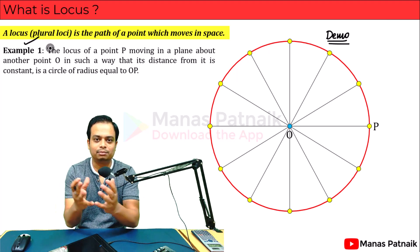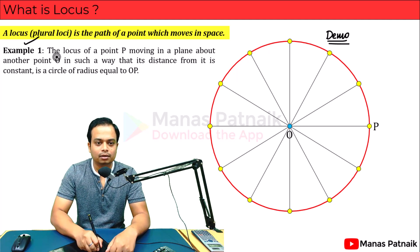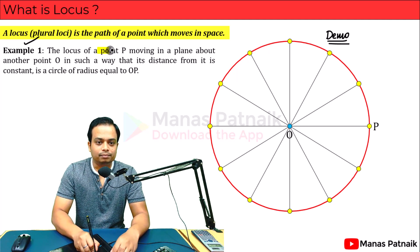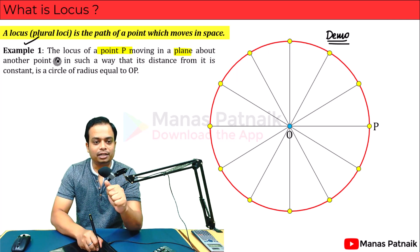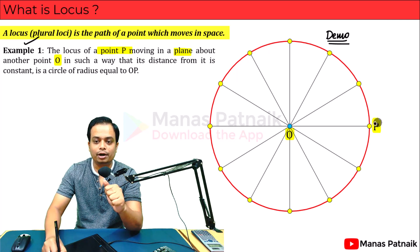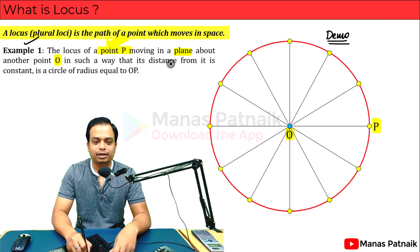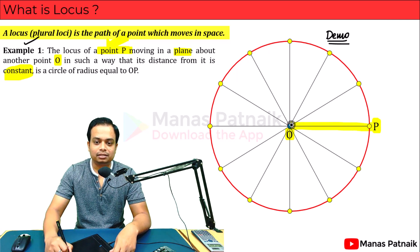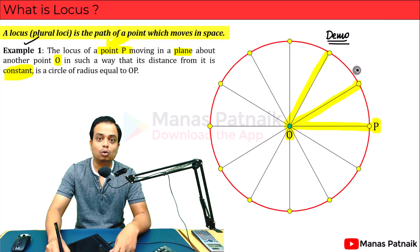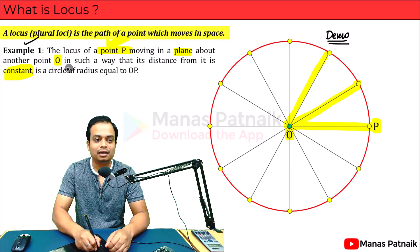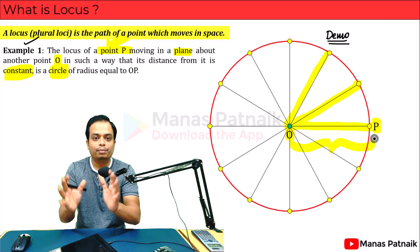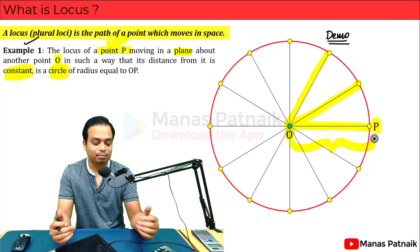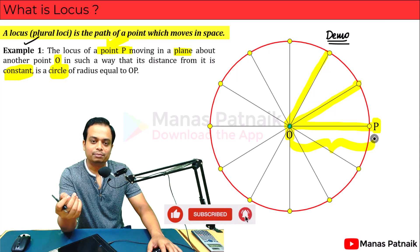Let me define this formally. The locus of a point P moving in a plane — the screen on which you are watching this video is a plane — about another point O, in such a way that its distance from O is always constant: the locus of the point, that is the path of the point, is nothing but a circle, and its radius is equal to the constant distance OP. That is Example 1. If there are any doubts, do let me know in the comments.